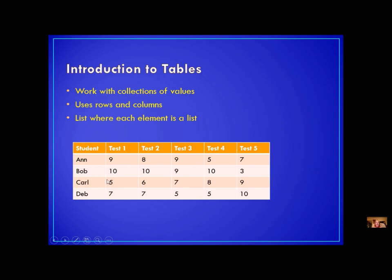For this particular example that we used for our program, we have a list of lists — our table — for all of our different scores. And then we had a complementary list to go with it so we knew the student for each section of scores. So we have our table and we have our list.